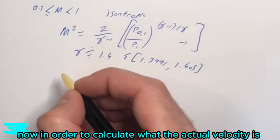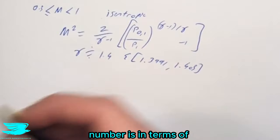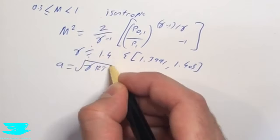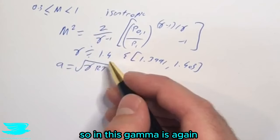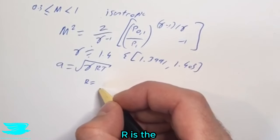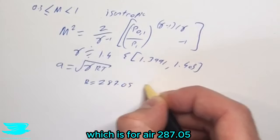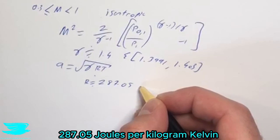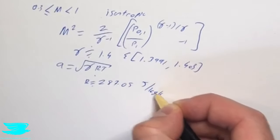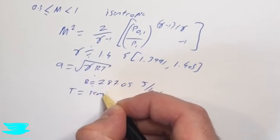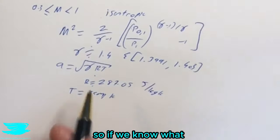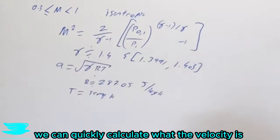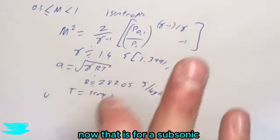To calculate the actual velocity, we just need to know the Mach number and the speed of sound. The speed of sound is: a = √(γRT), where gamma is approximately 1.4, R is the gas constant — for air, approximately 287.05 joules per kilogram kelvin (for dry air) — and T is the temperature in Kelvin. If we know the speed of sound and the Mach number, we can quickly calculate the resulting velocity. That covers subsonic compressible flow.